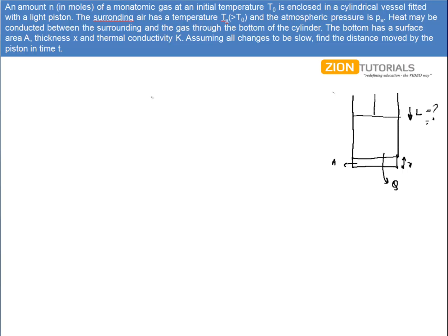Heat transfer is taking place through the bottom surface. Let the initial temperature of the cylinder be T0. Since heat is exchangeable, the temperature won't be constant. At any instant of time, dQ/dt — the heat flowing through the base — is given by K times area times (Ts - T) divided by X, where T is the instantaneous temperature of the gas.